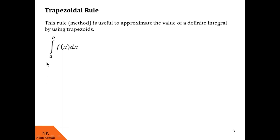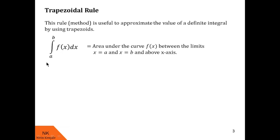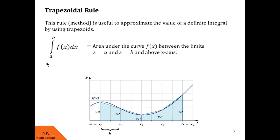We know that the definite integral of f dx over the limit a to b is nothing but the area under the curve f between the limits x equals a, x equals b, and above the x-axis. Look at this diagram for understanding. This is your curve f — the definite integral over the limit a to b is the area under this curve f between those limits. This blue shaded area is the value of this definite integral.